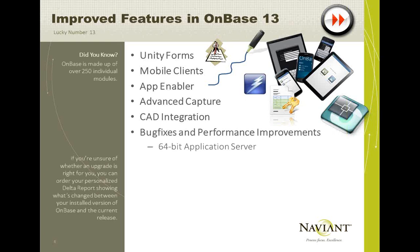There are a lot of bug fixes in this release — it's a bug fix and performance release, which is good news. If you're using 12 and frustrated with it, 13 is for you. The first big performance improvement is the 64-bit app server. Historically, OnBase runs a .NET app under IIS. Now, finally, it's a 64-bit app that can use more than 2 gigs of RAM. If you're having trouble with your app server running out of RAM while processing large numbers of user requests, 13 is your release.